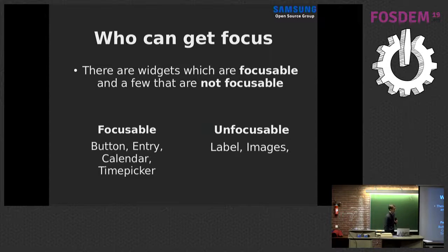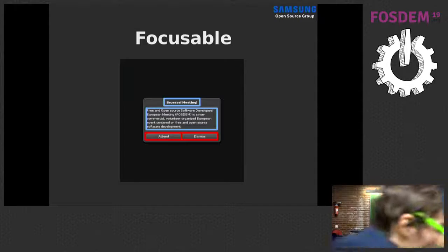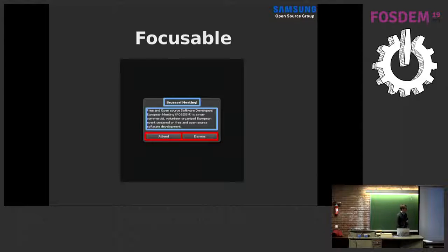However, a button, for example, gets a click event if you press enter. The entry hopefully changes its content if you press some keys. And the calendar, for example, wants to change the month when you press the plus or minus key. In our example from before, the text fields above and below are not focusable. However, the buttons below are focusable, so you could use them with a keystroke.